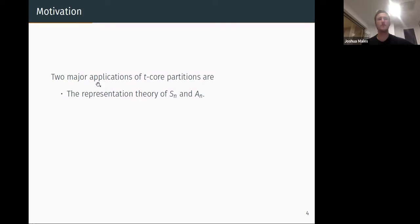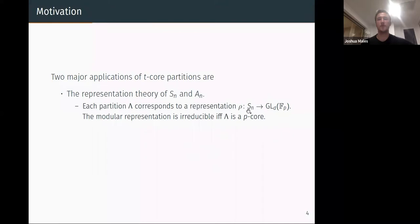Why do we care about these things? So there are two major applications that I've come across. t-core partitions capture the representation theory of these symmetric groups SN and AN. How do they do that? Each partition corresponds naturally to some representation that takes SN to GLD over some finite field. And even better than that, we know that this representation rho is irreducible if and only if lambda is a p-core. This p is down here on your FP. And this D is just some number.